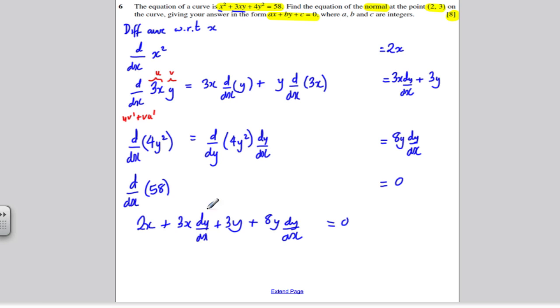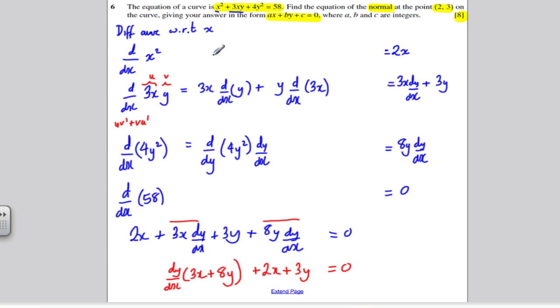Now at this point, I'm going to factorize out dy/dx from these two terms here. So I'm going to consider this term and this term. I'm going to factor out dy/dx. And I've got 3x of them plus 8y of them. And I've got plus 2x plus 3y equals 0. Now, at this point, I'm just going to take this on to the next page.